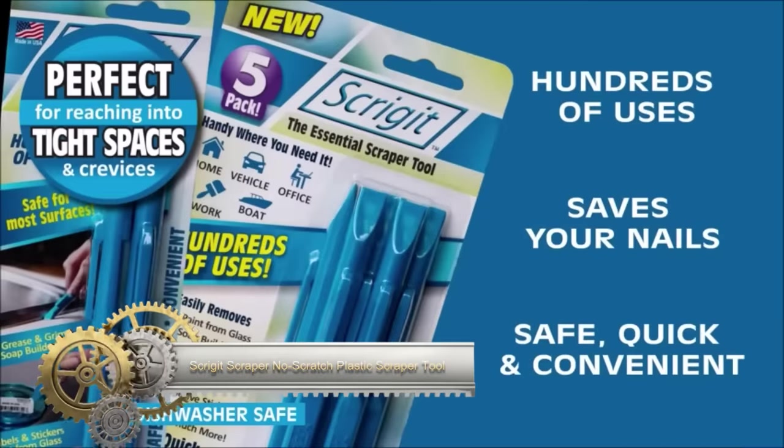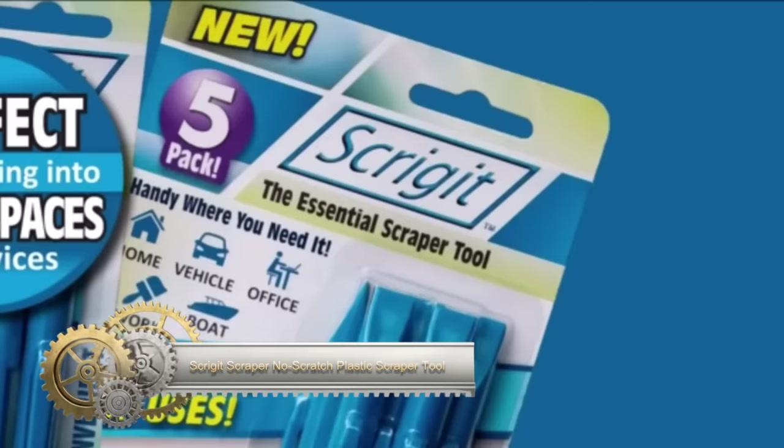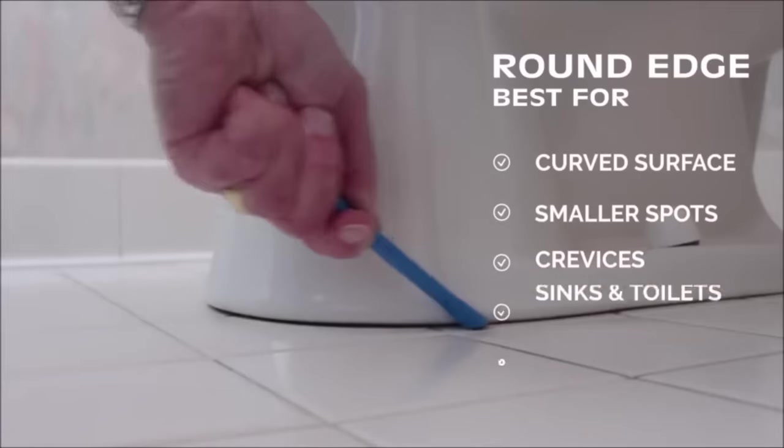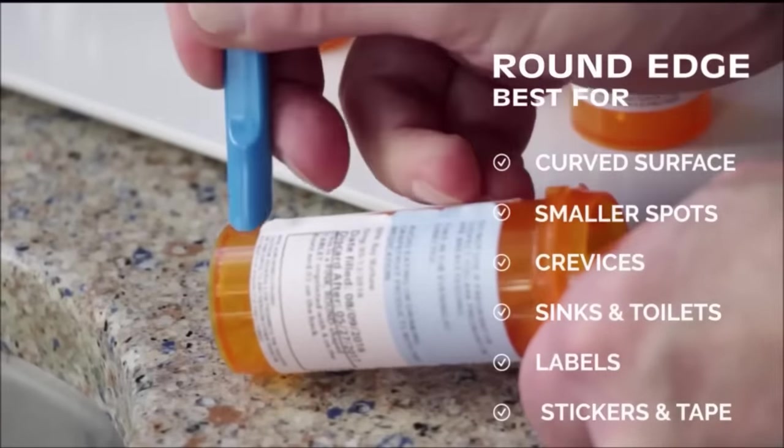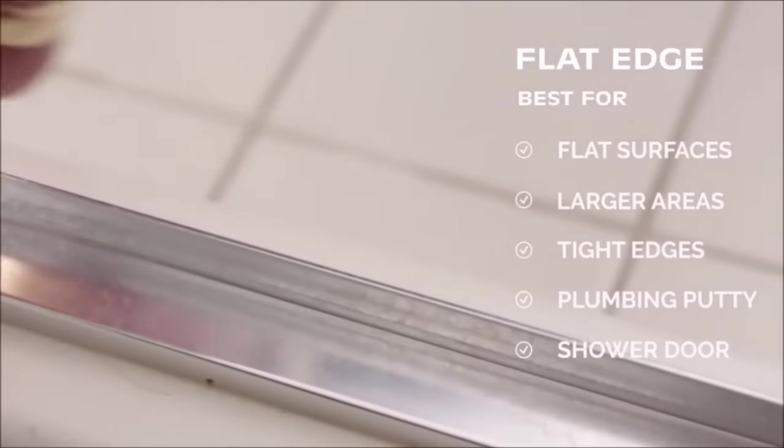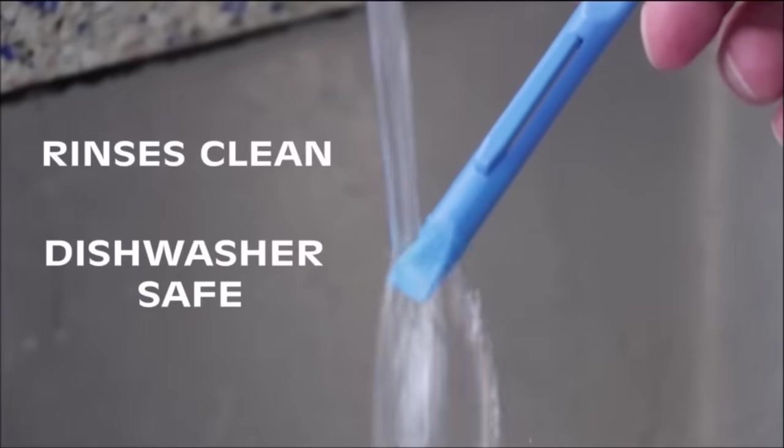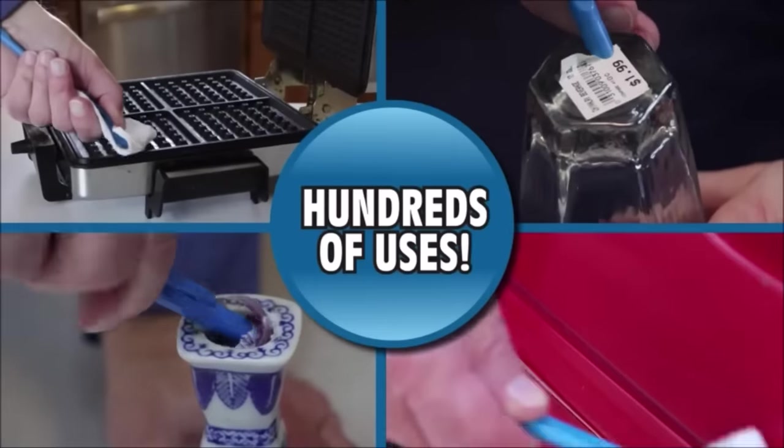The Scridget scraper is a versatile and practical tool designed for safely removing various substances like food, labels, stickers, paint, and grease from surfaces. Crafted from durable, non-scratch plastic, it's suitable for delicate surfaces and features a slim design for accessing tight spaces. With a comfortable grip, it ensures ease of use.